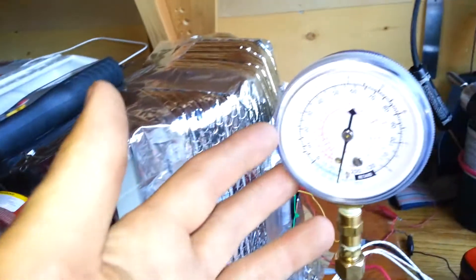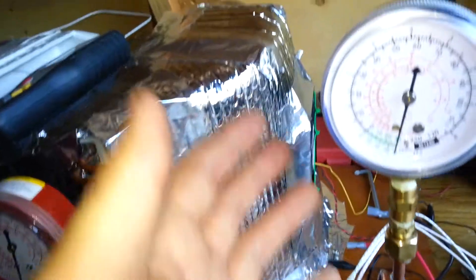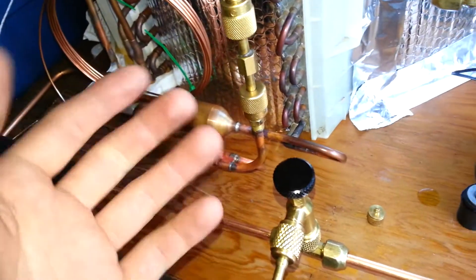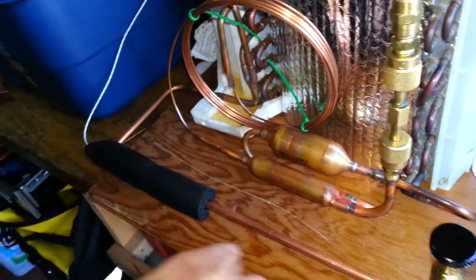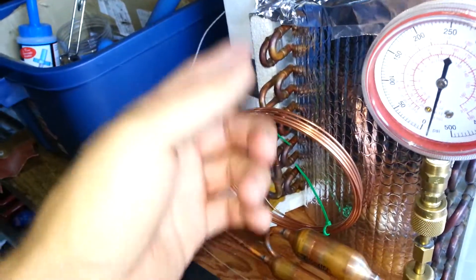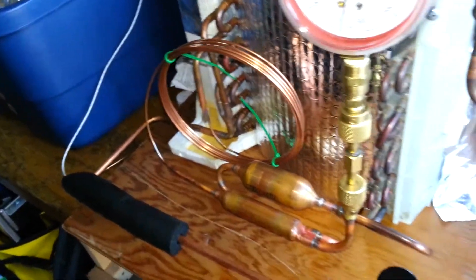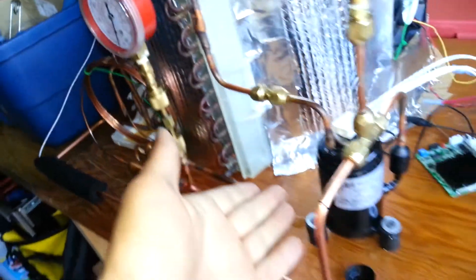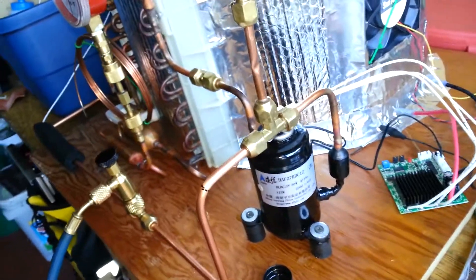Right now, it pulls the low side down really quite well. Very, very fast. But to do an evacuation on the high side there, it's pulling through the evaporator and it's pulling through the cap tube. So that's not any good. It's not going to be able to pull back through the compressor necessarily.